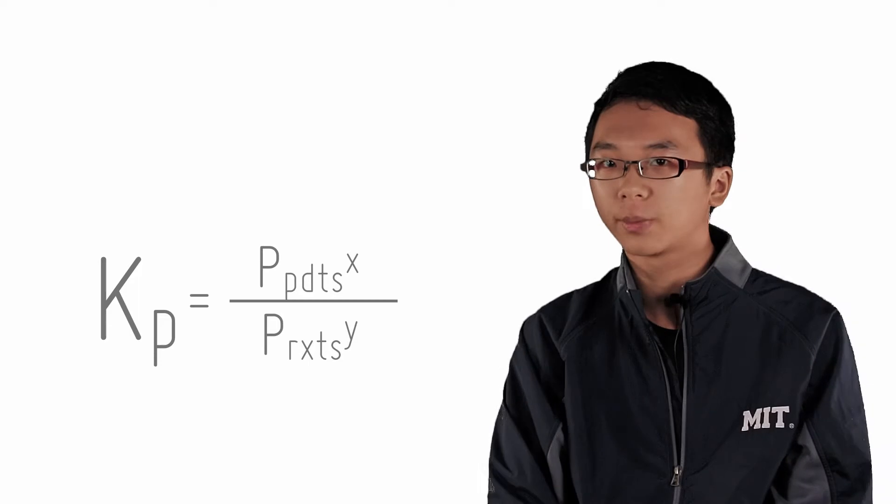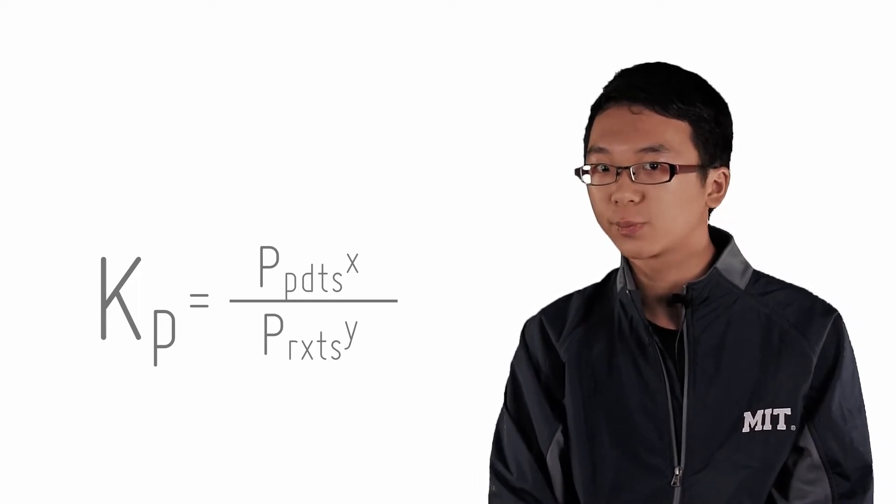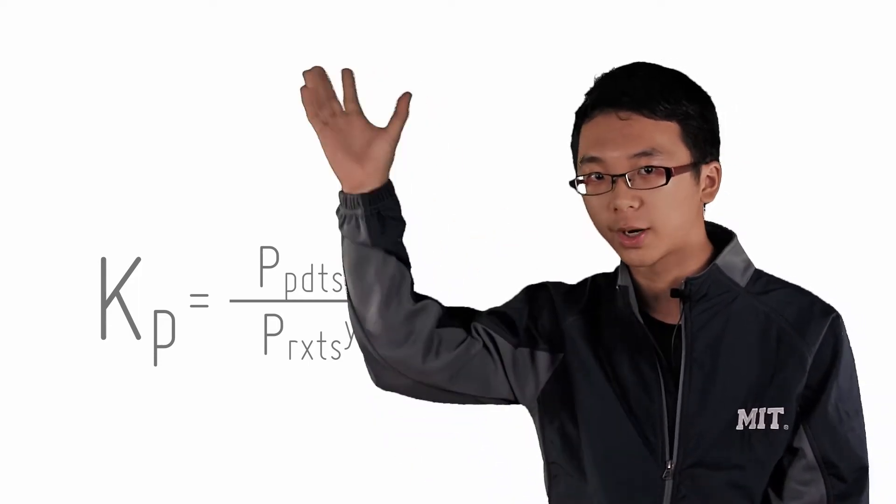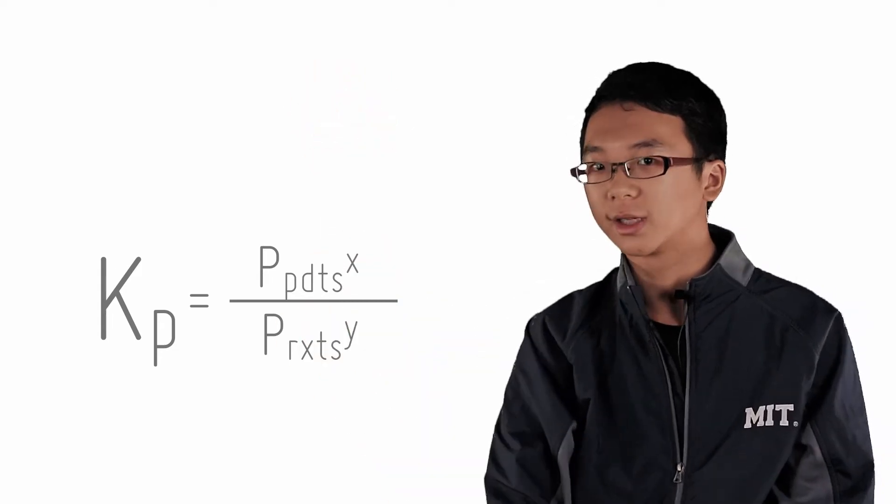This means that the equilibrium constant Kp, P for pressure, is now expressed in terms of the partial pressure of its products over its reactants. Or this equation, as you are already familiar with.